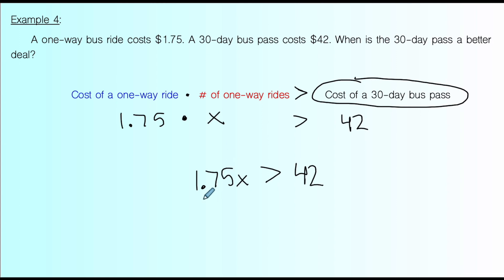So to solve this, quite simple, it's $1.75 times x. So we're going to divide by $1.75. And that's going to leave us with when the number of rides is greater than 24. So when you are going to take more than 24 rides on this bus, don't buy one-way tickets because you're going to end up spending more money than you need to. Anything over 24 rides, it's worth it for you to buy the 30-day bus pass.